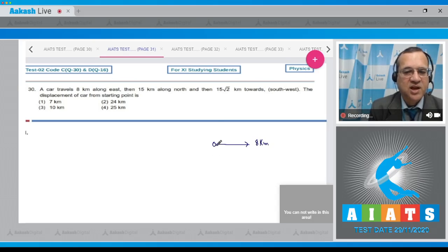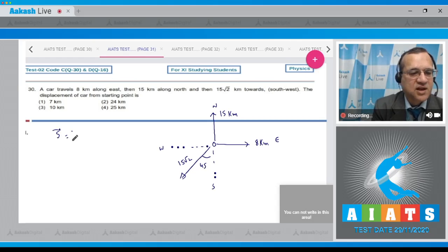In the third case, 15 root 2 kilometers south-west. If this is north, this is east, this is south and this is west, and the third displacement is 15 root 2 kilometers. Angle is 45 degrees - this is south and this is west. Three displacement will give the resultant s1 plus s2 plus s3.